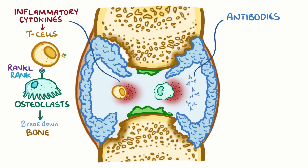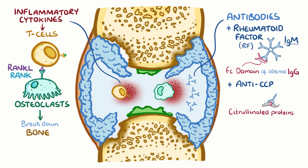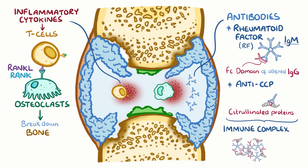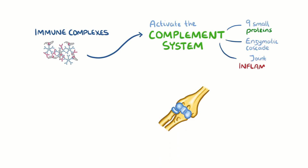Meanwhile, antibodies also enter the joint space. One antibody is called rheumatoid factor, or RF, which is an IgM antibody that targets the constant Fc domain of altered IgG antibodies. Another antibody is anti-cyclic citrullinated peptide antibody, or anti-CCP, which targets citrullinated proteins. When these antibodies bind to their targets, they form immune complexes, which accumulate in the synovial fluid. There, they activate the complement system, a family of nine small proteins that work in an enzymatic cascade to promote joint inflammation and injury.